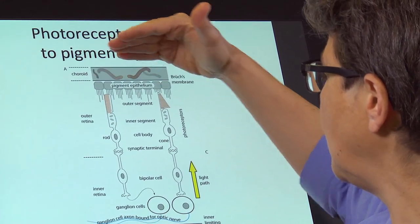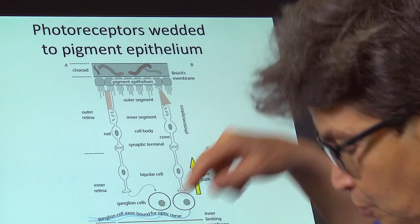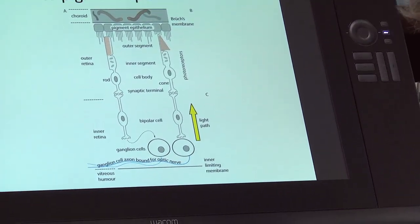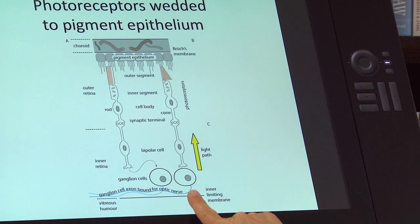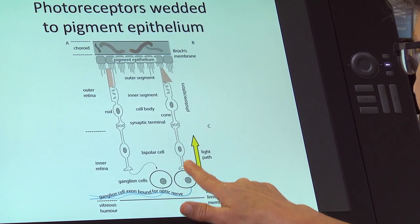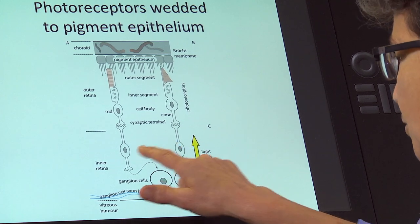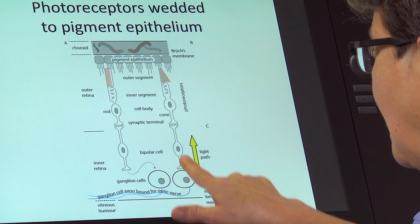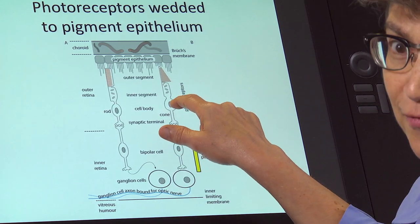The choroid epithelium, and then there's vitreous humor. So the pupil would be way down there. Light is coming up, it's going through all these other types of cells, ganglion cells, bipolar cells, there are a bunch of other cells in the retina, horizontal and amacrine cells, and then it reaches finally the photoreceptors.